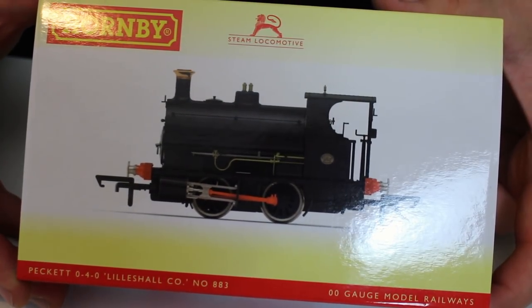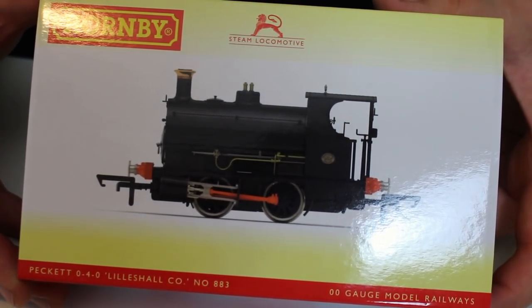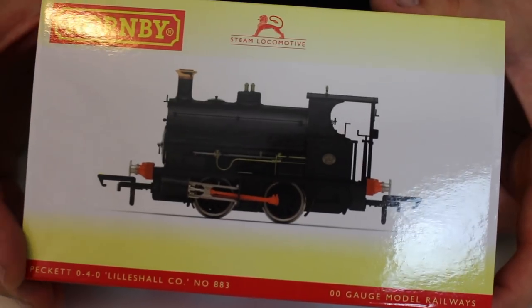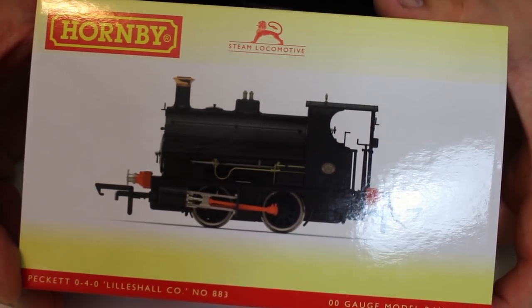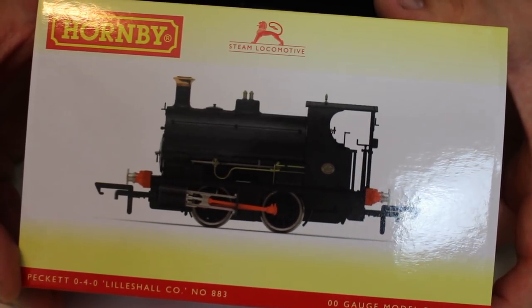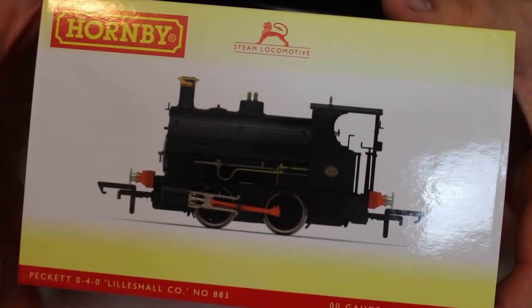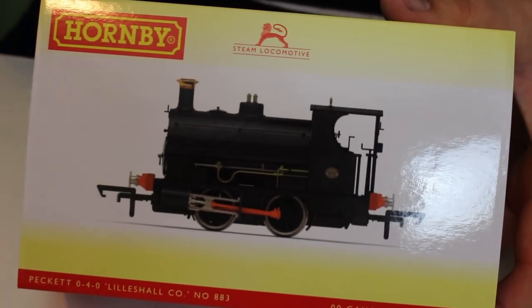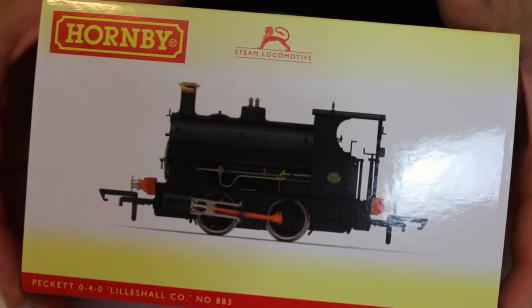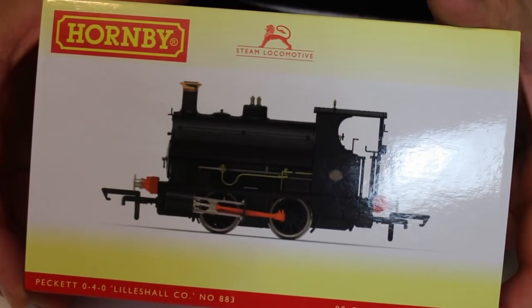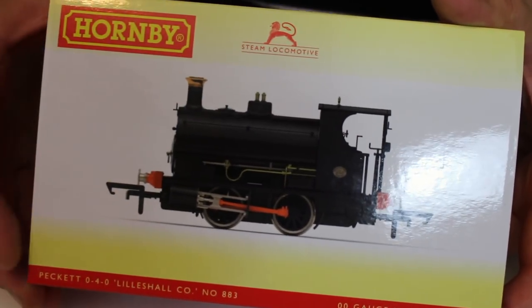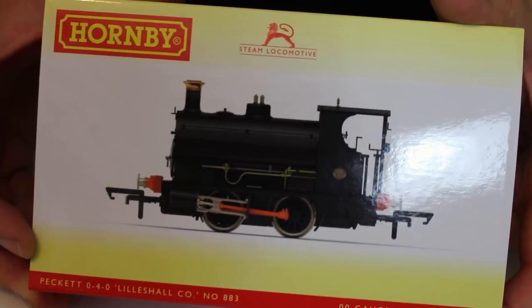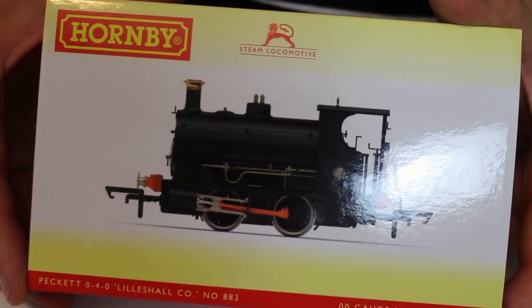This is works number 883 of I think 1901, the W4 Peckett and the Lillis Hall company were a large engineering company in Shropshire. They had quite a large fleet of locomotives and quite an extensive internal rail network at the time. You can tell how big their rail network must have been for this to have gone into their fleet as number 10, so there was at least nine other locomotives. I think there were actually closer to 20 at one point.